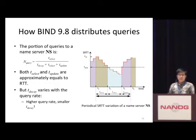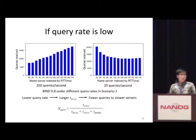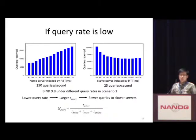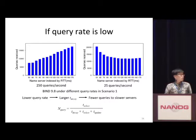In BIND 9.8, the decaying speed is coupled with the query rate. That means if the query rate is higher, the SRTT will decay faster, resulting in a shorter decaying phase and more queries sent to the slower server. To verify this, we redid the measurement under a lower query rate — reducing from 250 queries per second to 25 queries per second. With the lower query rate, the estimated round-trip time decays slower, giving a longer decaying phase and fewer queries sent to the slower server. As the result shows, most queries are sent to the fastest name server.